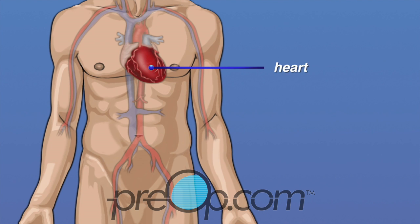...in the middle of your chest, under your ribs. It is the muscle that pumps blood to the rest of your body. Blood flows through tubes called blood vessels.